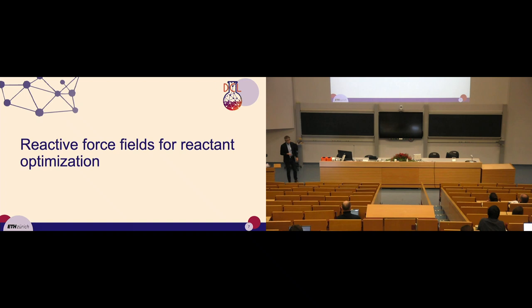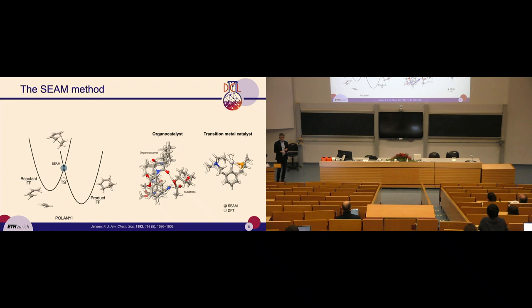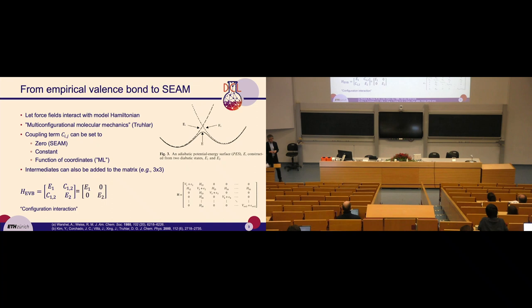The first application is reactive force fields for reactant optimization. We take a quite old idea by Frank Jensen from the early 90s called the SIEM method. In the SIEM method, we take two force fields — a classical method — and then we take a transition state of a reaction as the intersection between the reactant force field and the product force field. This works not only for simple reactions such as the Diels-Alder, but also for more complex transformations, even including transition metals, and we can get qualitatively correct structures and sometimes useful energies.